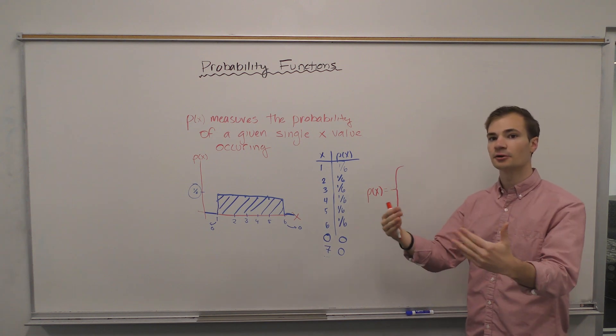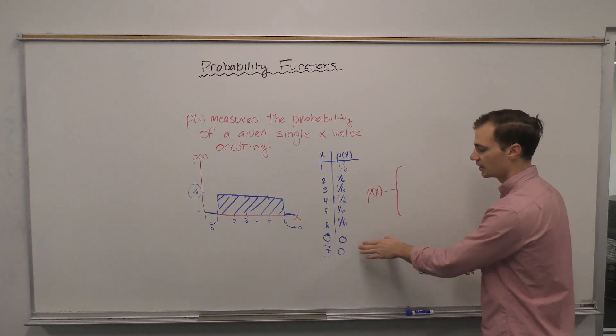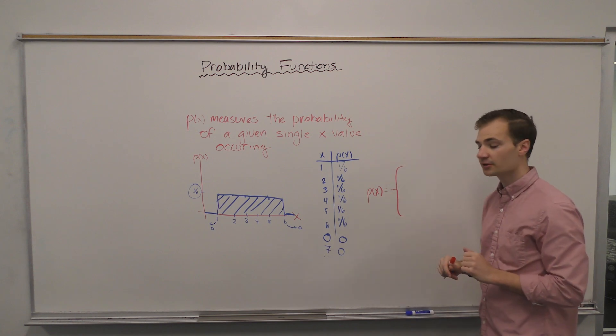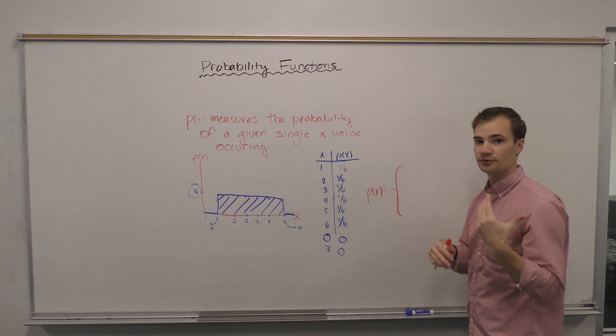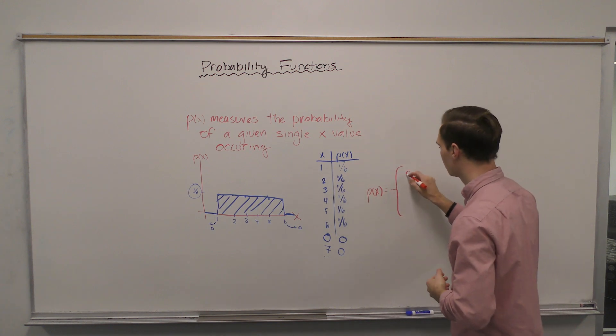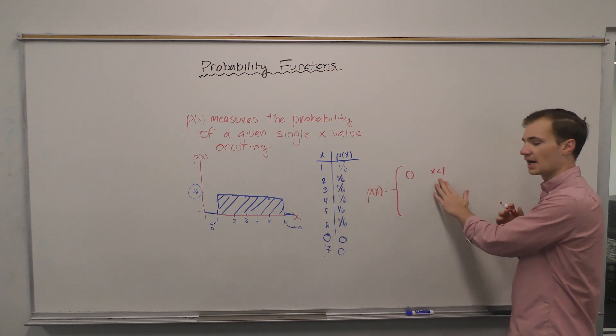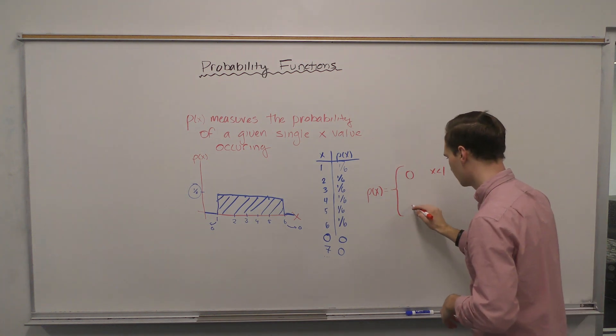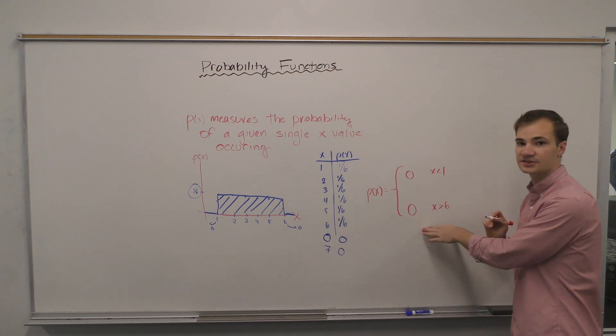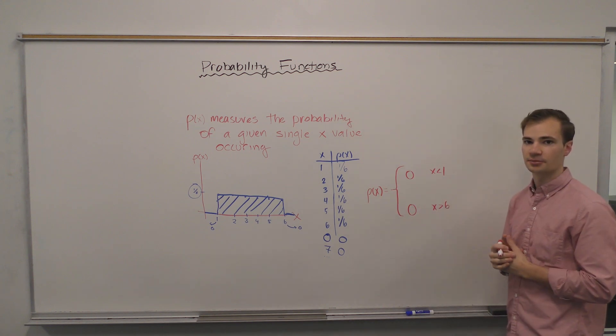So we know that anything less than one is going to be a zero value. So when x is less than one, we get a zero probability. Similarly, when x is greater than six, we get a zero output as well.